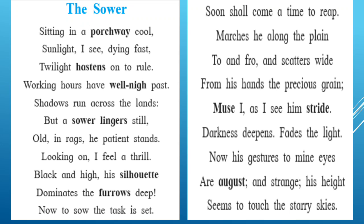'Looking on, I feel a thrill. Black and high, his silhouette dominates the furrows deep.' The way the farmer was working into the farm gave the writer a thrill — he was working so passionately and it is beyond one's limit. 'Black and high' is the description of the farmer — he is black in color, quite tall, and his silhouette, meaning the outline of someone against a brighter background — that dominates the furrows deep. He was quite healthy and tall, and whatever he was working on — furrowing, anchoring, or plowing the land — was done so well.